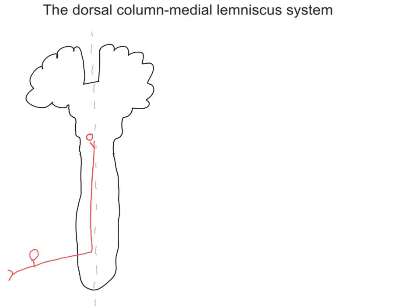You'll recall that the second-order neuron is the one that decussates. So this second-order neuron sends its axon across the midline and ascends all the way up to the thalamus. Let's draw on the thalamus — one half here, one half there. Our second-order neuron has decussated and synapses in the thalamus onto a third-order neuron, which projects to the sensory cortex. Thinking about your sensory homunculus, lumbar dermatomes from the lower half of the body are represented more medially in the sensory cortex.